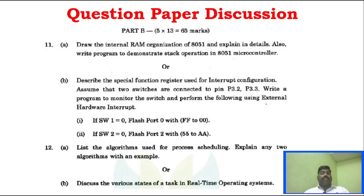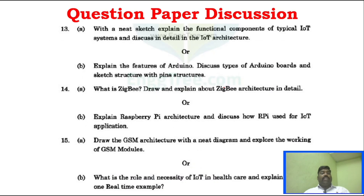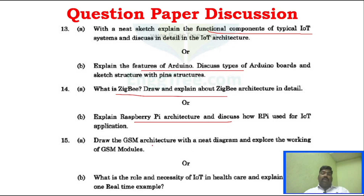For Part B in that paper: Memory organization — internal RAM organization of 8051, and interrupt organization. Unit 2 Part B: Process scheduling and RTOS. Unit 3: Components of a typical IoT system and features of Arduino. Unit 4: Zigbee and Raspberry Pi architecture. Unit 5: GSM architecture.